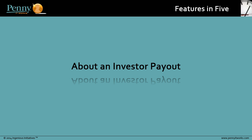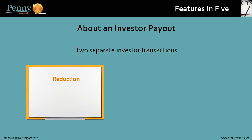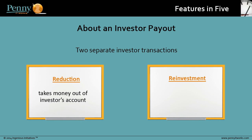First, let me tell you a little about an investor payout. It's made up of two separate investor transactions — a reduction that takes money out of the investor's account, and a possible reinvestment that uses the money removed in the reduction and puts it back into the fund.